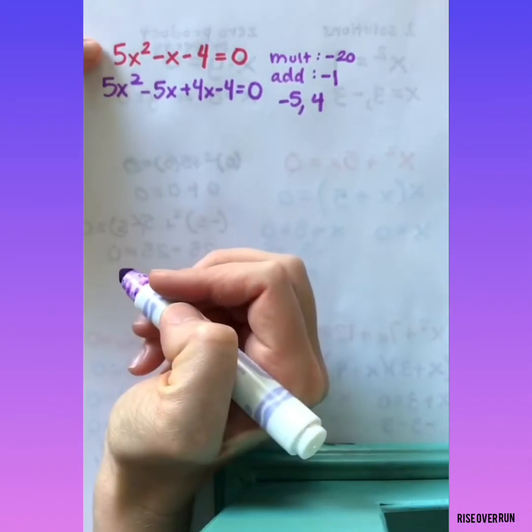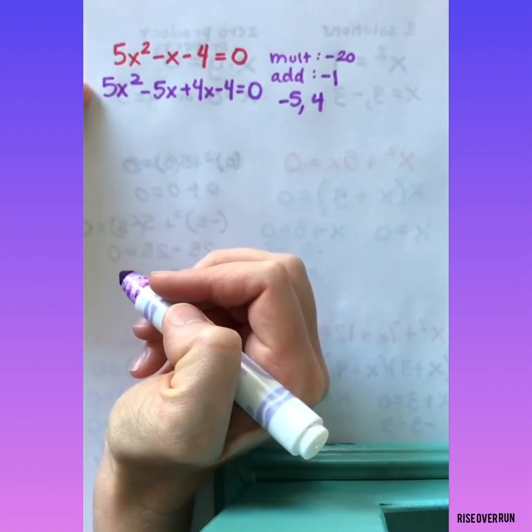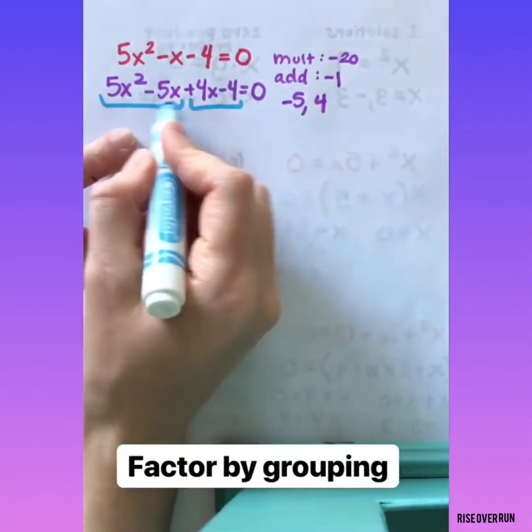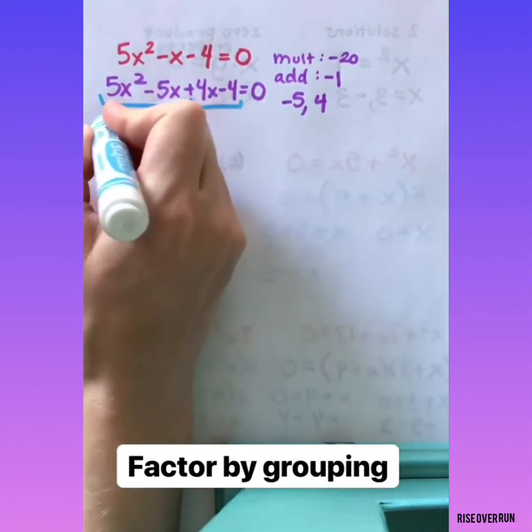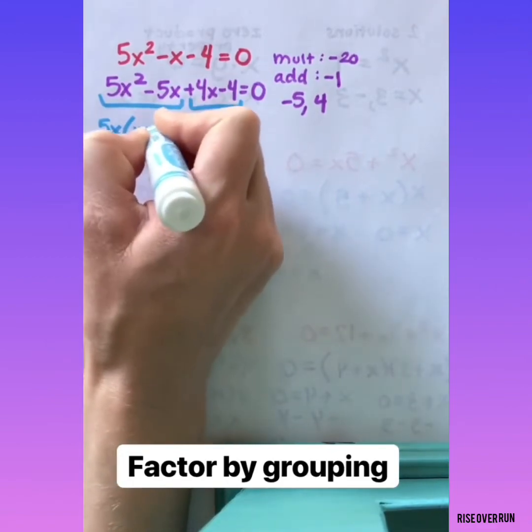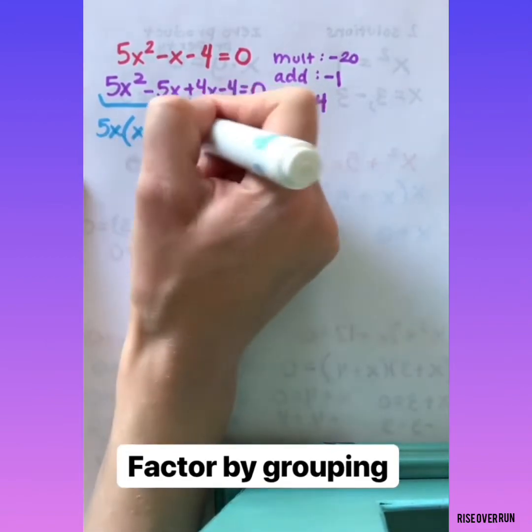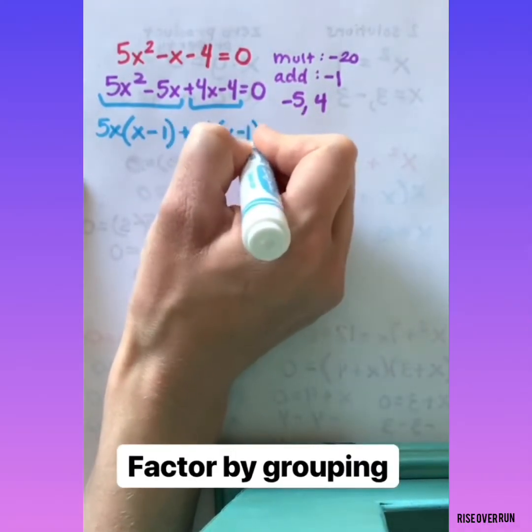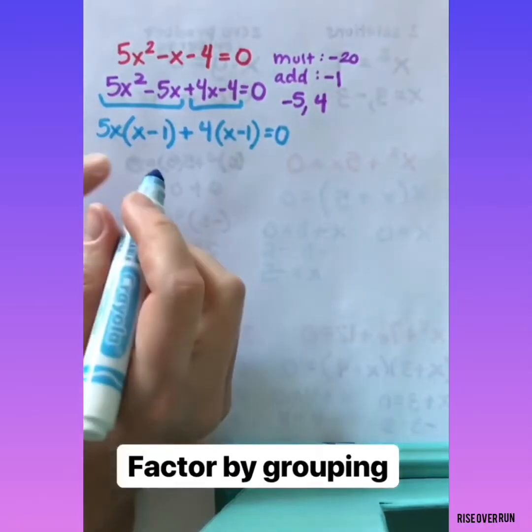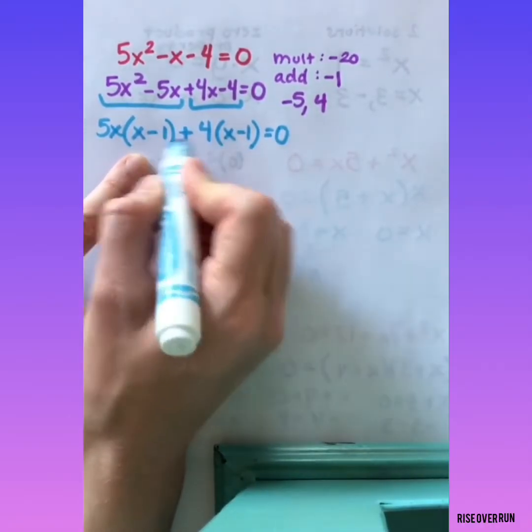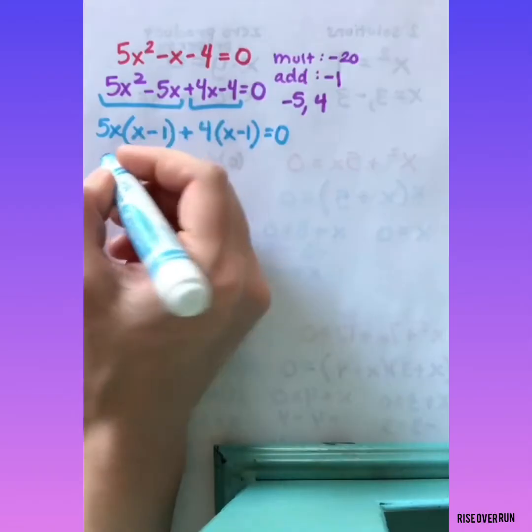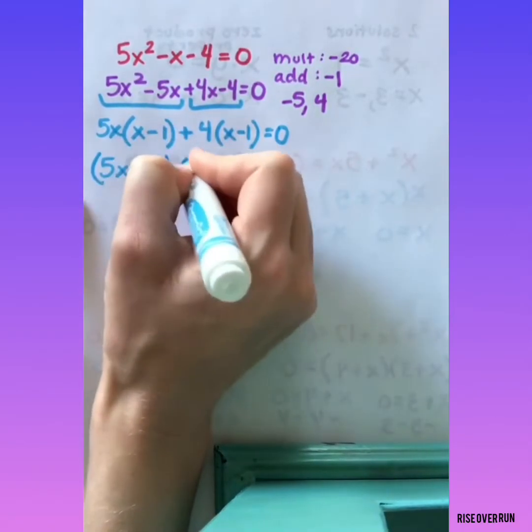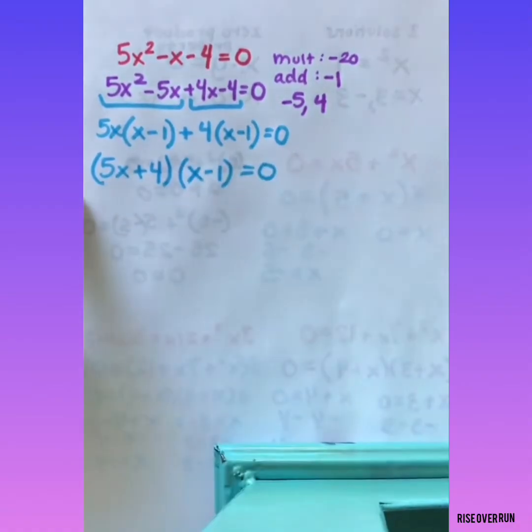So I haven't changed anything yet. This still has the same value. I've just taken this middle term and split it into two terms. I'm going to factor each of these groups. The goal of factoring by grouping is that you have the same thing going on here. Now I can rewrite this as 5x plus 4 times x minus 1 equals 0.